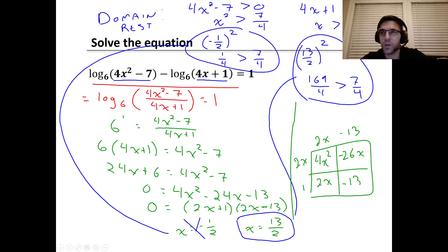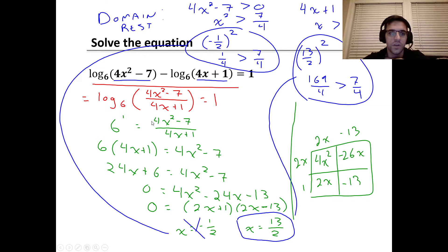Here's another example. The solving process is routine. We write this using the quotient rule — the first log divided by the second — then rewrite as an exponential: six to the power of one equals (4x squared minus 7) over (4x plus 1). Multiplying both sides by (4x plus 1) and distributing the 6, then pushing everything to the right side and setting equal to zero, we factor the quadratic using box method. We get two solutions: x equals negative 1 over 2, and x equals 13 over 2.